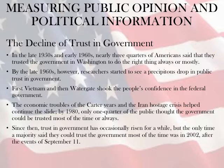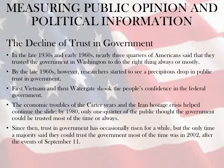In the late 1950s and early 1960s, nearly three-quarters of Americans said they trusted the government in Washington to do the right thing, always and mostly. By the late 1960s, researchers started to see a precipitous drop in trust in government. Beginning with the Vietnam War and Watergate, these two events shook people's confidence in the federal government. The economic troubles of the Carter years and the Iran hostage crisis helped continue the slide. By 1980, only one-quarter of the public thought that the government could be trusted most of the time or always. Trust in government has occasionally risen, but the only time a majority said they could trust the government most of the time was in 2002, after the events of September 11th.